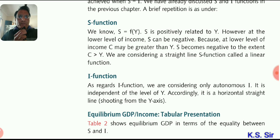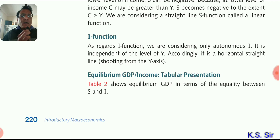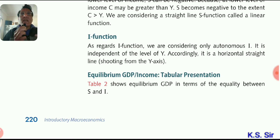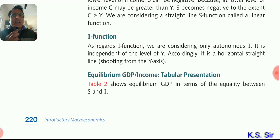Now the investment function. We are considering only autonomous investment, which is planned by the producer — how much they plan to invest in the economy. It is fixed and called autonomous investment. Sometimes there is compulsion-based investment too, once a business is started and further investment is required. But here we consider autonomous investment only. It is independent of the level of income, so its graph is a horizontal straight line parallel to the x-axis.